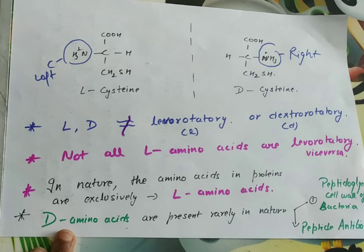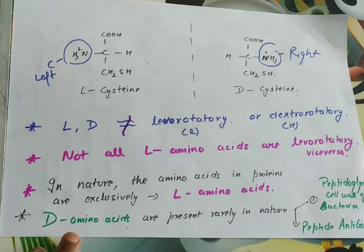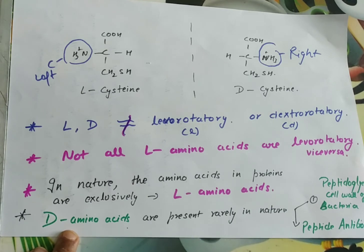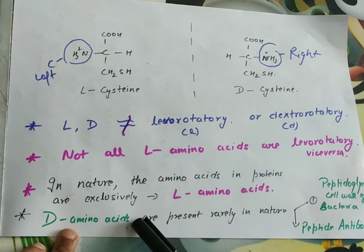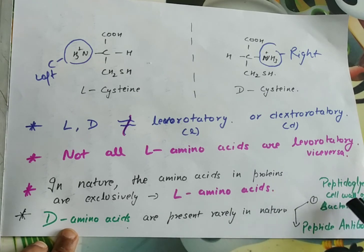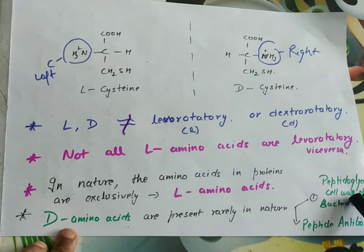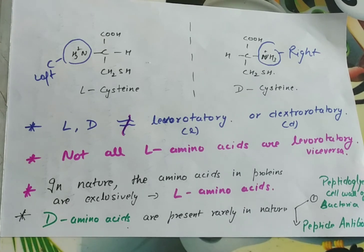A very important point is that nature has exclusively selected L amino acids. All naturally occurring proteins contain exclusively the L form of amino acids. Only very few exceptions exist where D amino acids are found — for example, in bacterial cell wall peptidoglycan, and in some peptide antibiotics. Otherwise, nature has exclusively selected L amino acids.